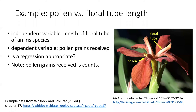The example that we're going to look at comes from the Whitlock and Schroeder statistics textbook. It involves an iris flower and the relationship between the floral tube of that flower and the amount of pollen grains that are deposited on the stigma of the flower.